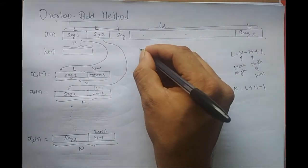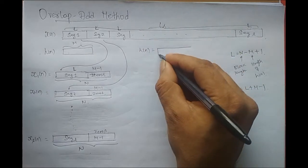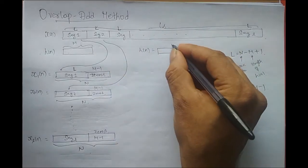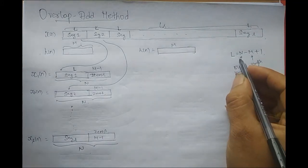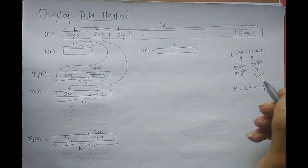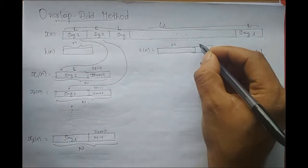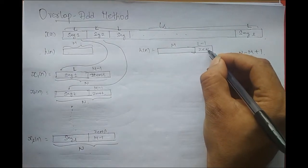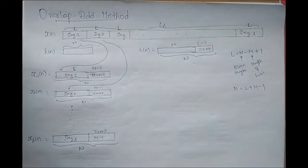Now I have to make H(n) the same length as well, because we are performing circular convolution. Its original length is M, so I need to pad L minus 1 zeros so that the total length becomes capital N.